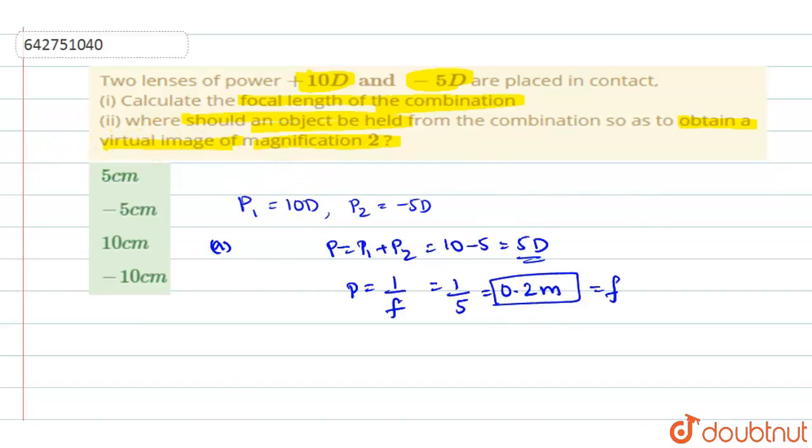Now the next thing they are asking is to calculate the second question. Where should an object be held from the combination so as to obtain a virtual image of magnification 2? So you should get a magnification of 2 with a virtual image, and in that case where should an object be placed? That is the question.